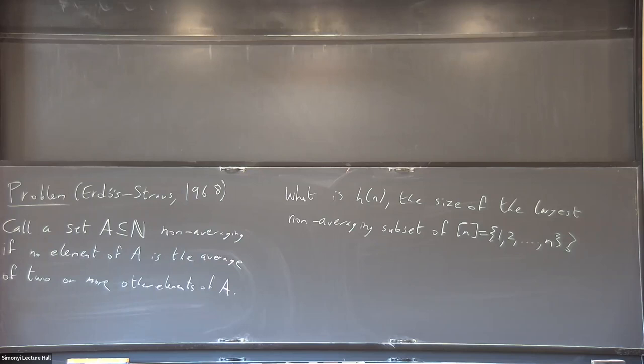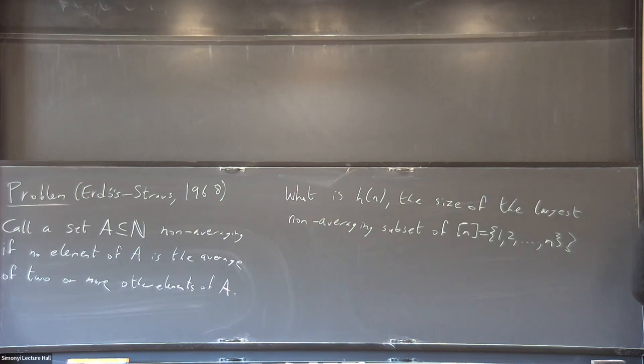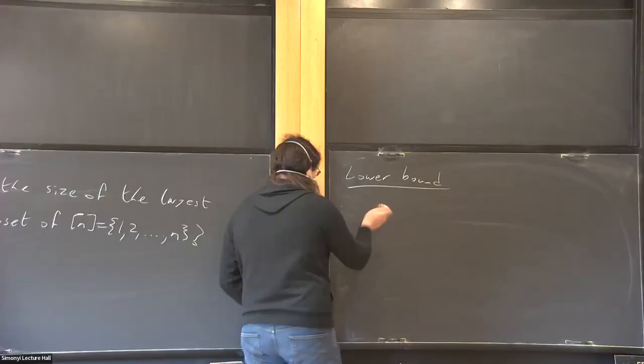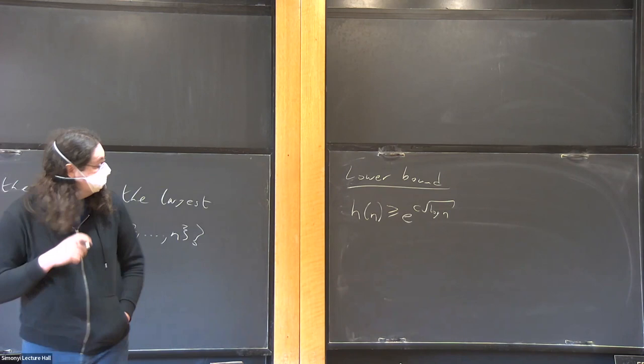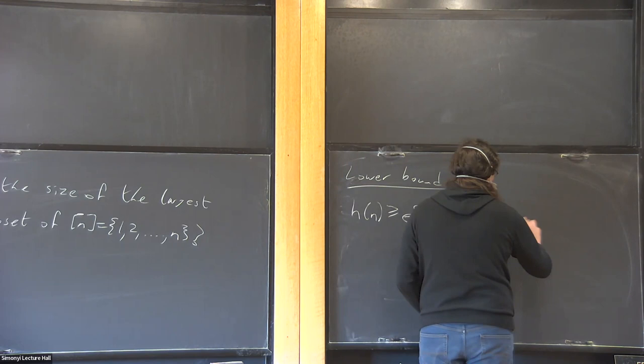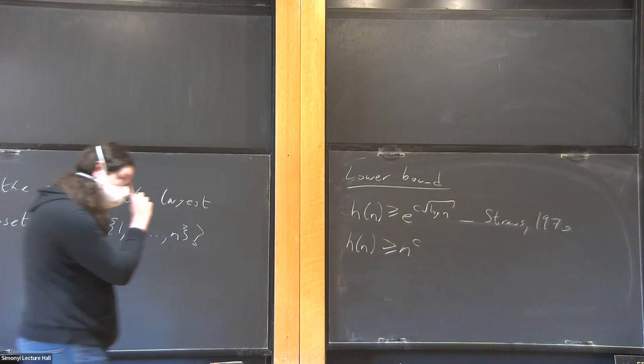Let me start with saying a little bit about the lower bound. Originally, if you look at Strauss's paper, Strauss showed that H(N) is at least some sort of Behrend-type bound. But it turns out that's nowhere near sharp, and actually there are polynomial-size constructions. This is Strauss from about 1970. Abbott in 1975 showed that it is actually polynomially larger — it has polynomial size.